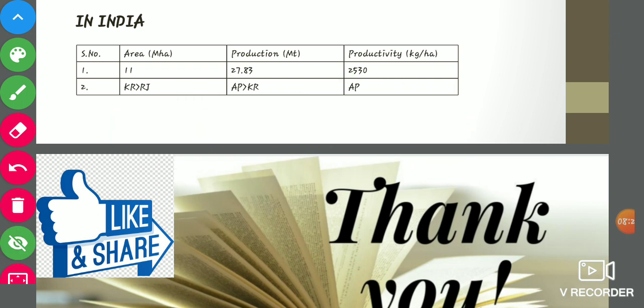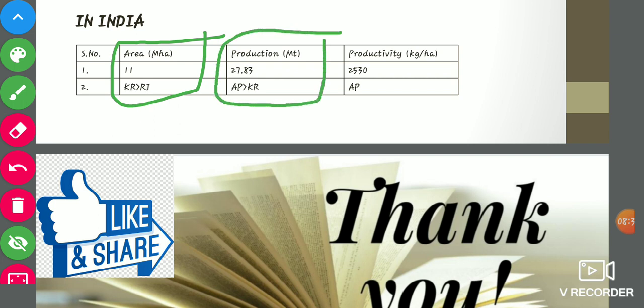In an Indian perspective, the area under maize is 11 million hectares and the leading state is Karnataka, followed by Rajasthan. In terms of production, the total is 27.83 million tons, and Andhra Pradesh is the leading state followed by Karnataka. For productivity, Andhra Pradesh leads with 2530 kg per hectare.